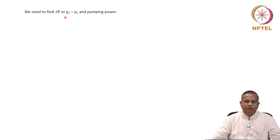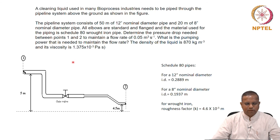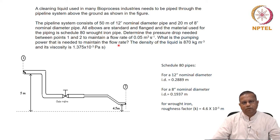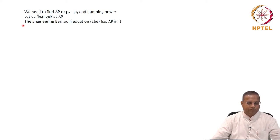We need to find delta p (p₂ minus p₁) and the pumping power — that is what we need to find here. Determine the pressure drop needed between points 1 and 2 to maintain a flow rate of 0.05 m³/s, and what is the pumping power needed to maintain the flow rate. These are the two things needed. We will first look at delta p. From the engineering Bernoulli equation we can get delta p.